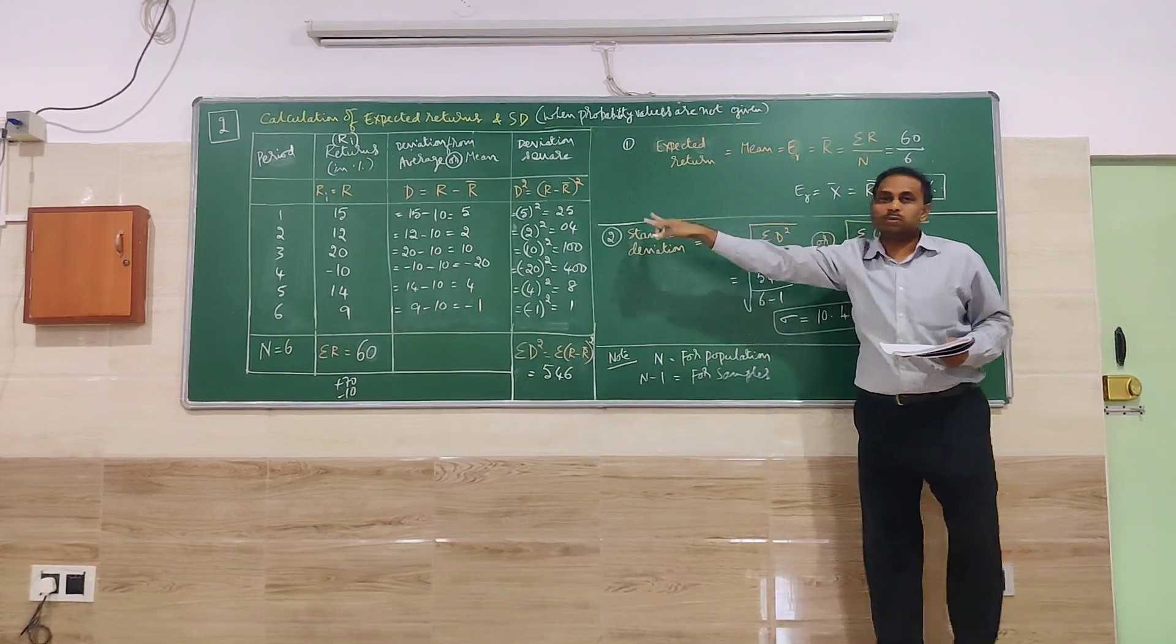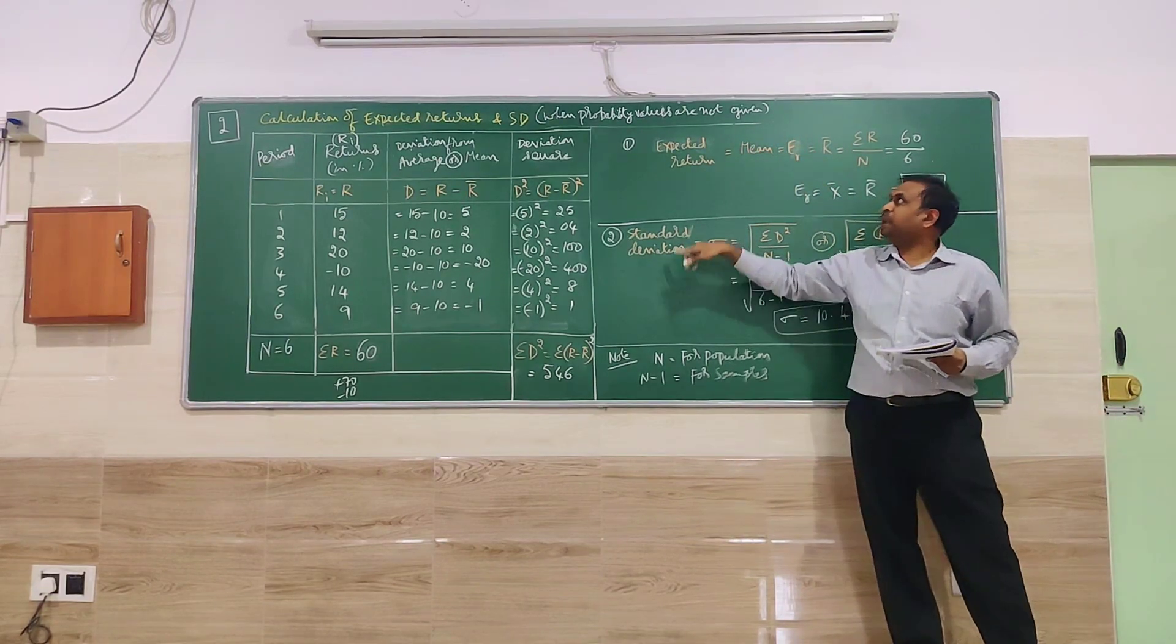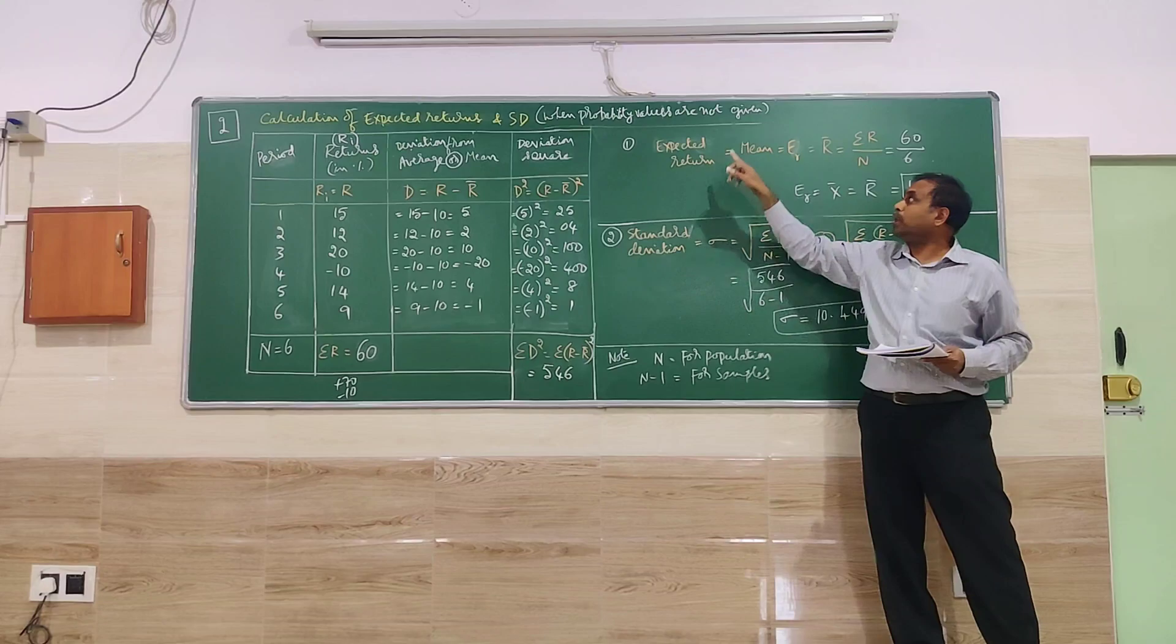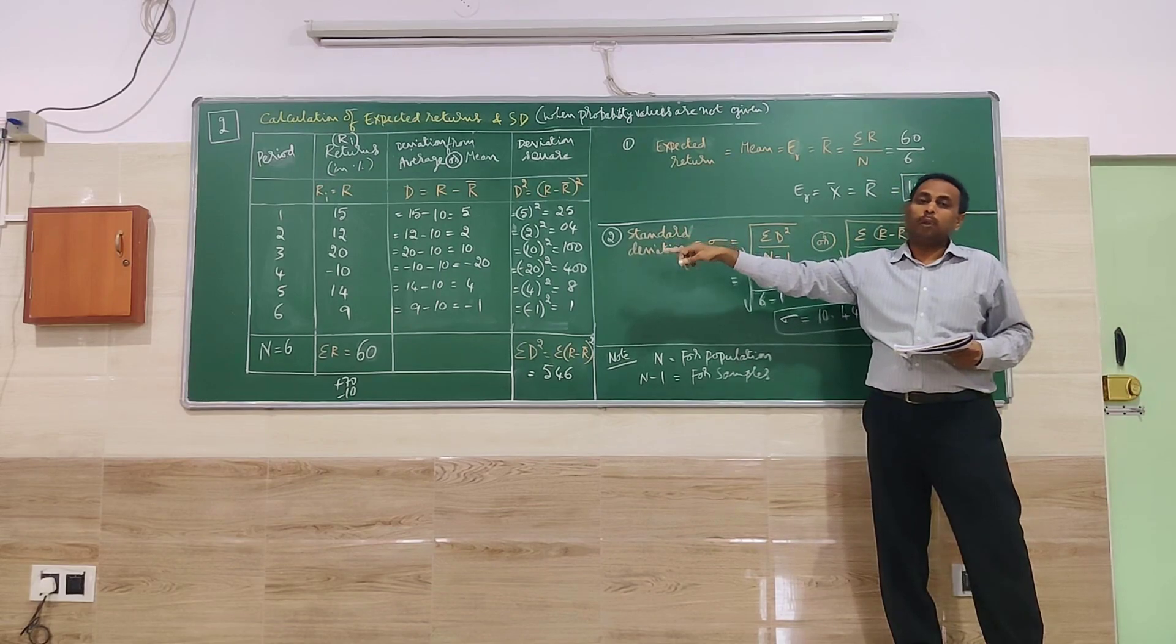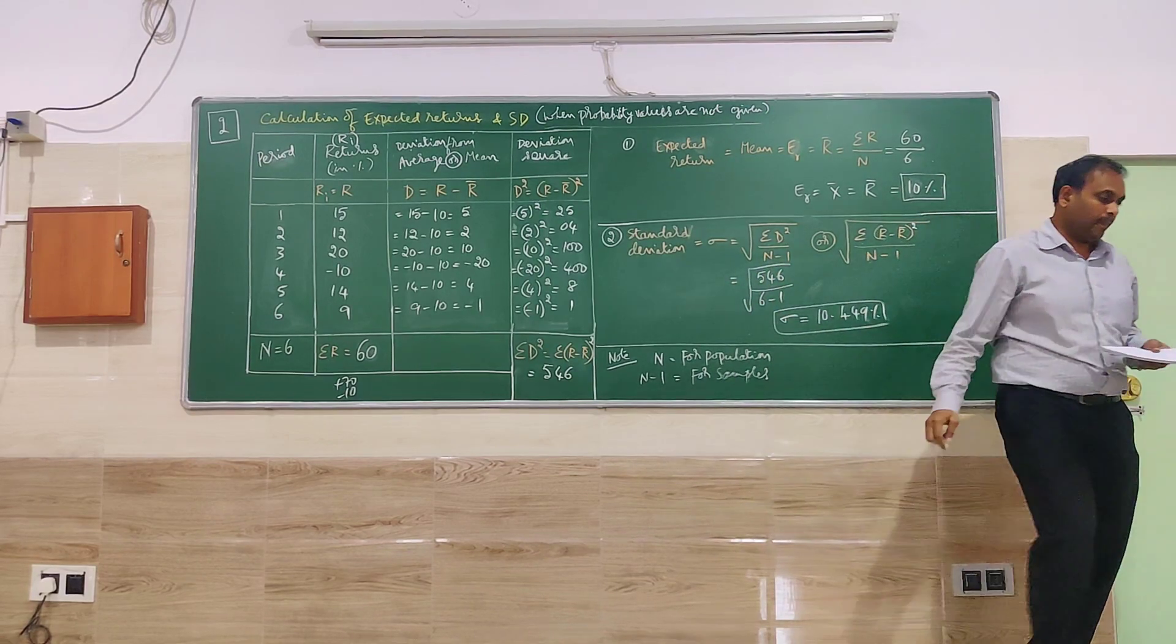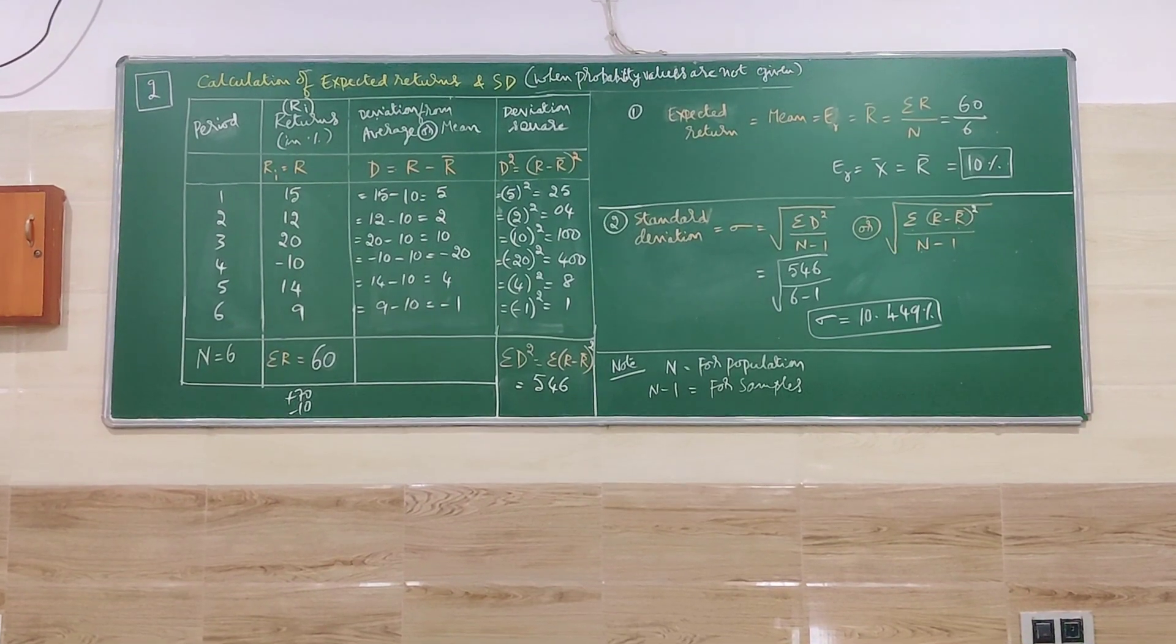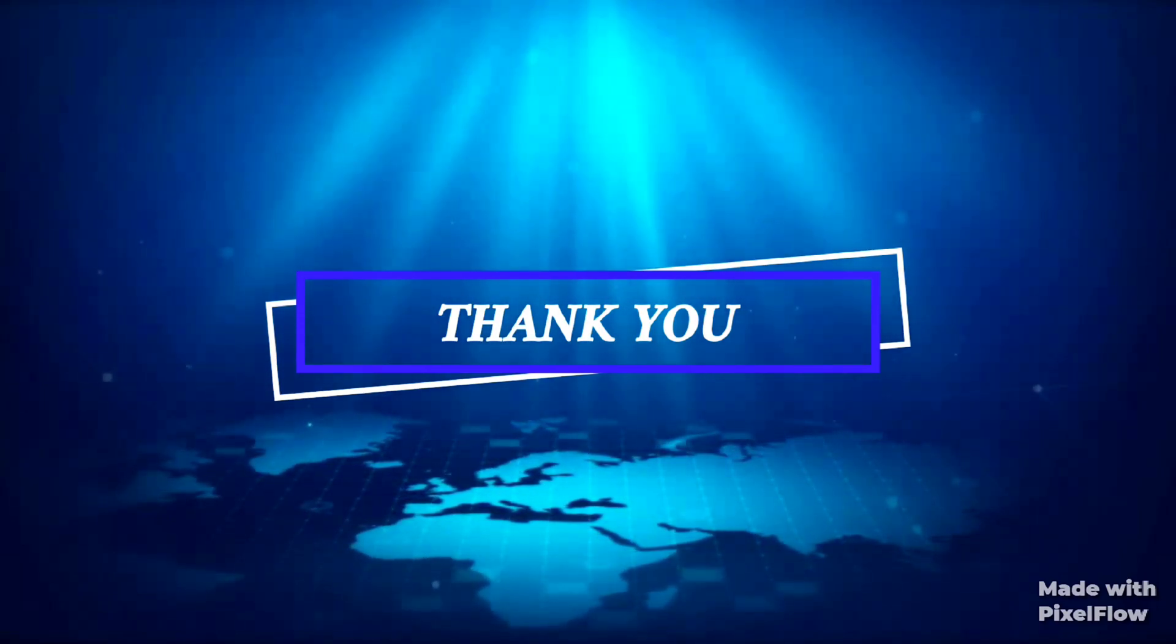One more thing you have to remember is here probability, probability is not given. Probability values are not given. So then also we can find standard deviation. So how to find standard deviation when probability values are not given in the problem? This is a good example for you. In the exam you have to be careful. Not always probability to be given to find the standard deviation. Without probability value also, we can find the risk value or standard deviation.